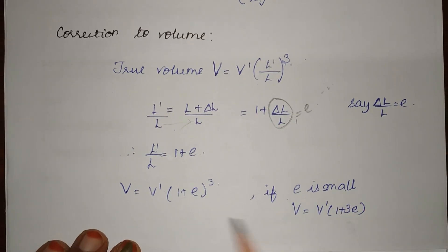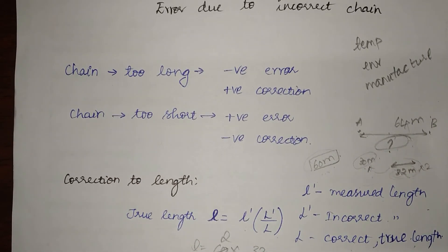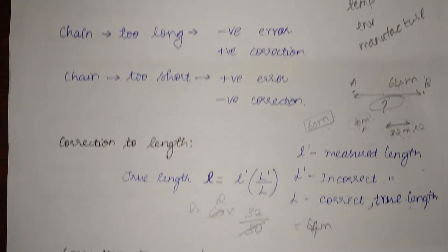And in case E is small, we know that when this is expanded we will get E³ and all. So this E³ is going to be further small when compared to the error, so that will be negligible. And as a result we will get 1 + 3E. So this is about the correction due to the error caused by incorrect chain.